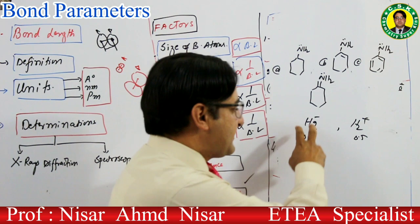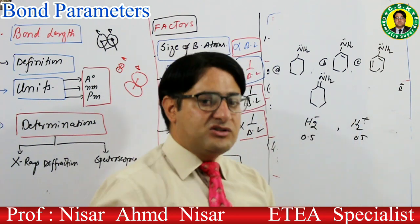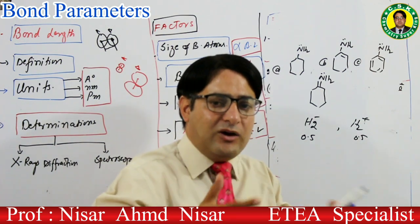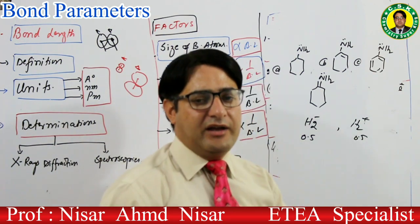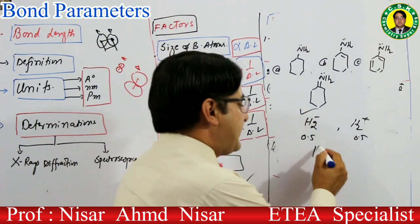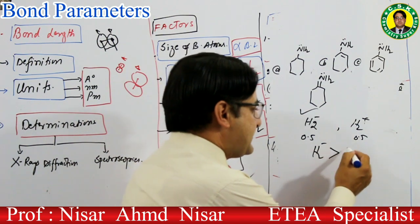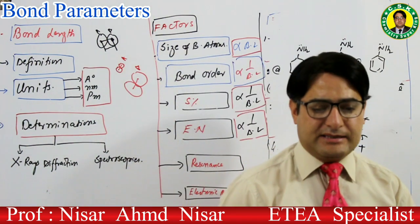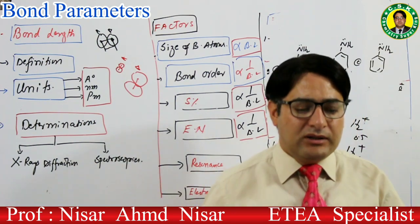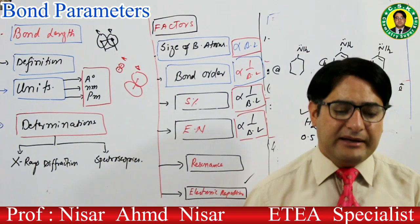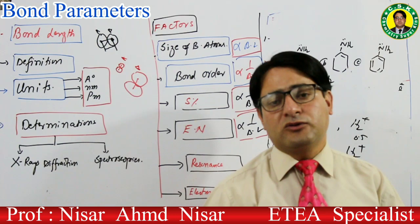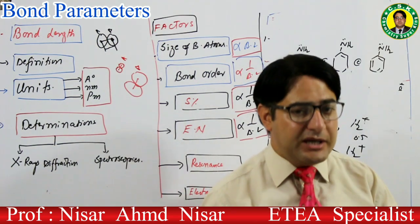باقی سب factors same ہیں — لیکن H2⁻ میں electrons زیادہ ہیں تو ان میں repulsion بھی زیادہ ہوگی۔ Repulsion زیادہ ہونے سے atoms تھوڑے سے دور چلے جاتے ہیں۔ اس لیے H2⁻ کی bond length زیادہ ہوگی H2⁺ کے compare میں۔